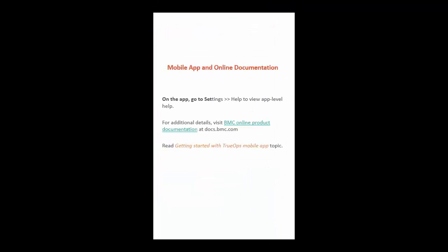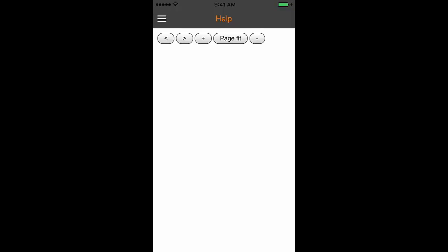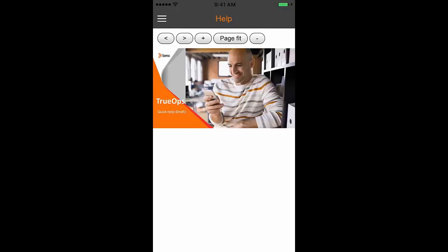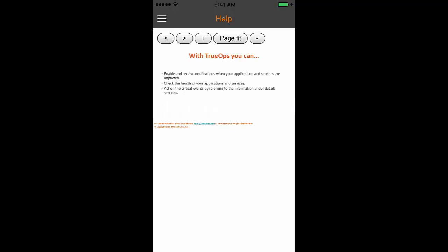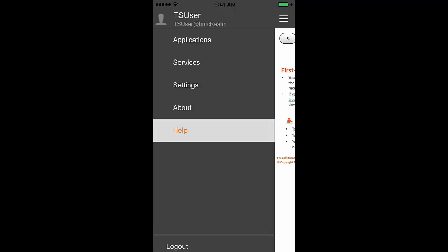On the app, go to Settings and tap on Help to view app-level help. For additional details, visit BMC online product documentation at docs.bmc.com and read the Getting Started with TrueOps Mobile App topic. Thanks for watching the video.